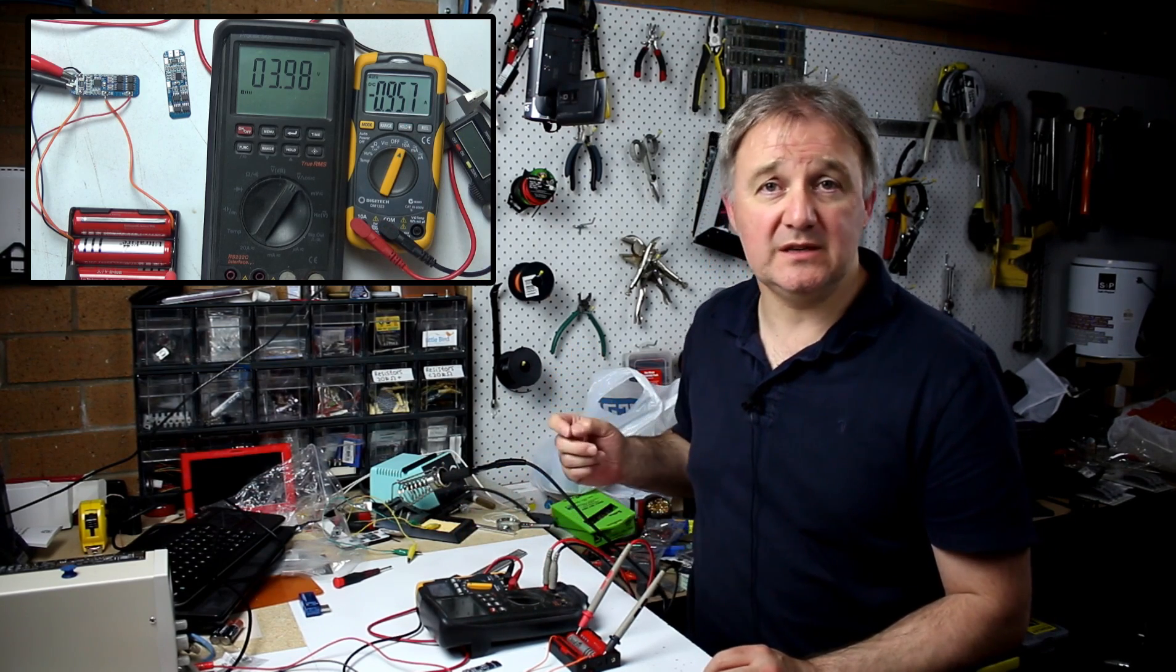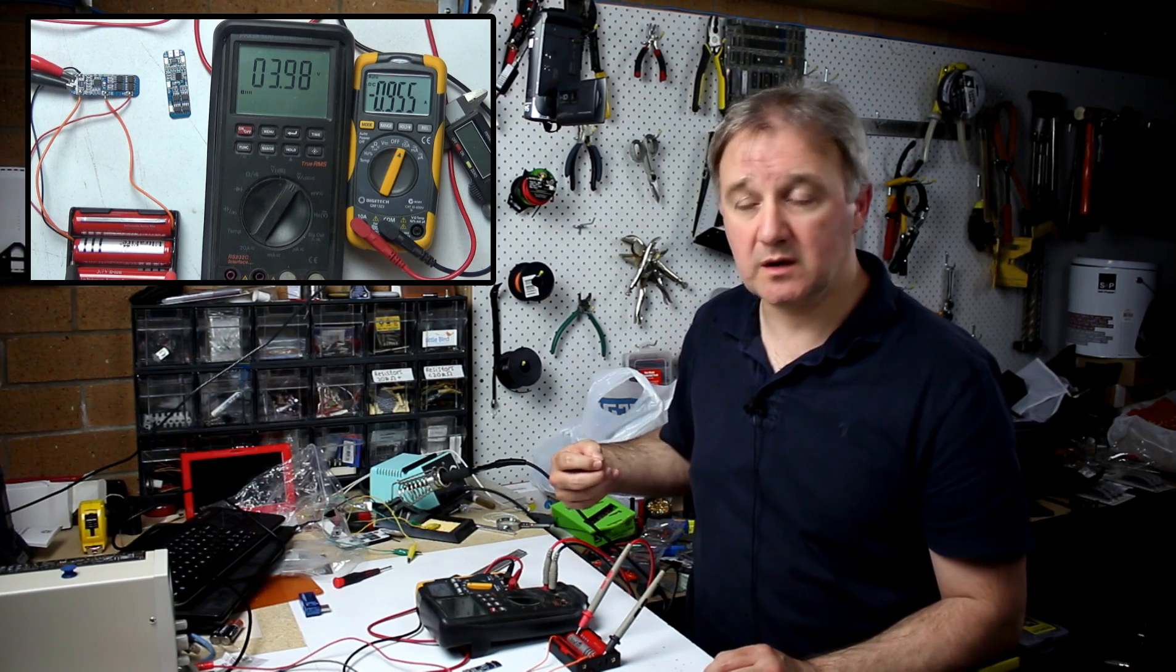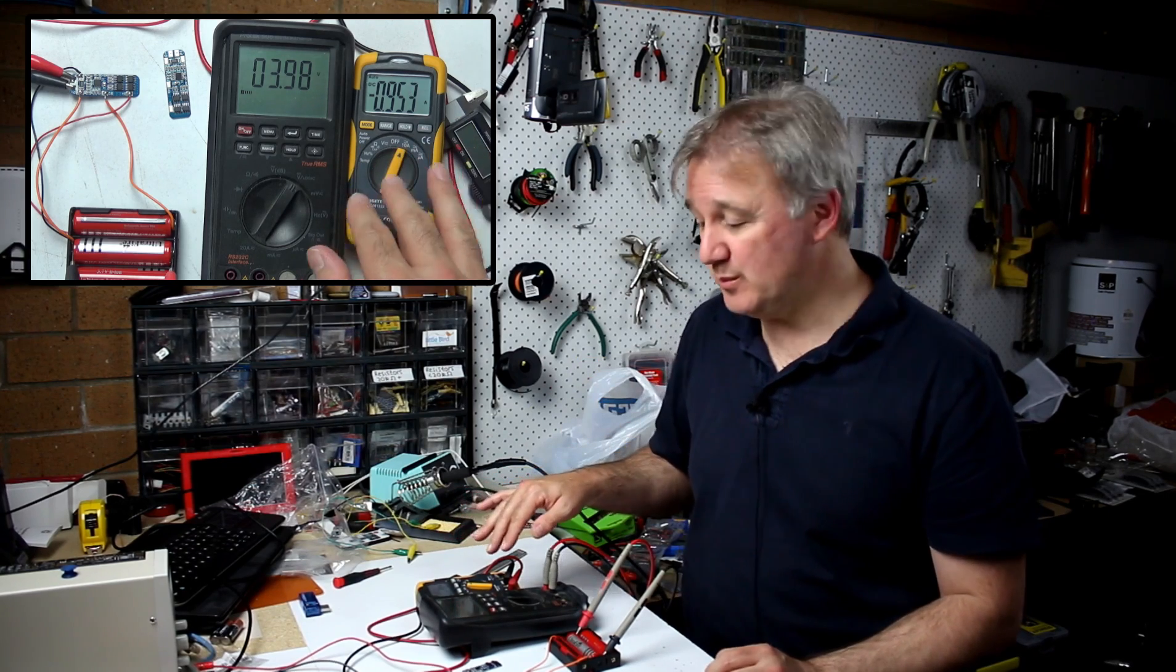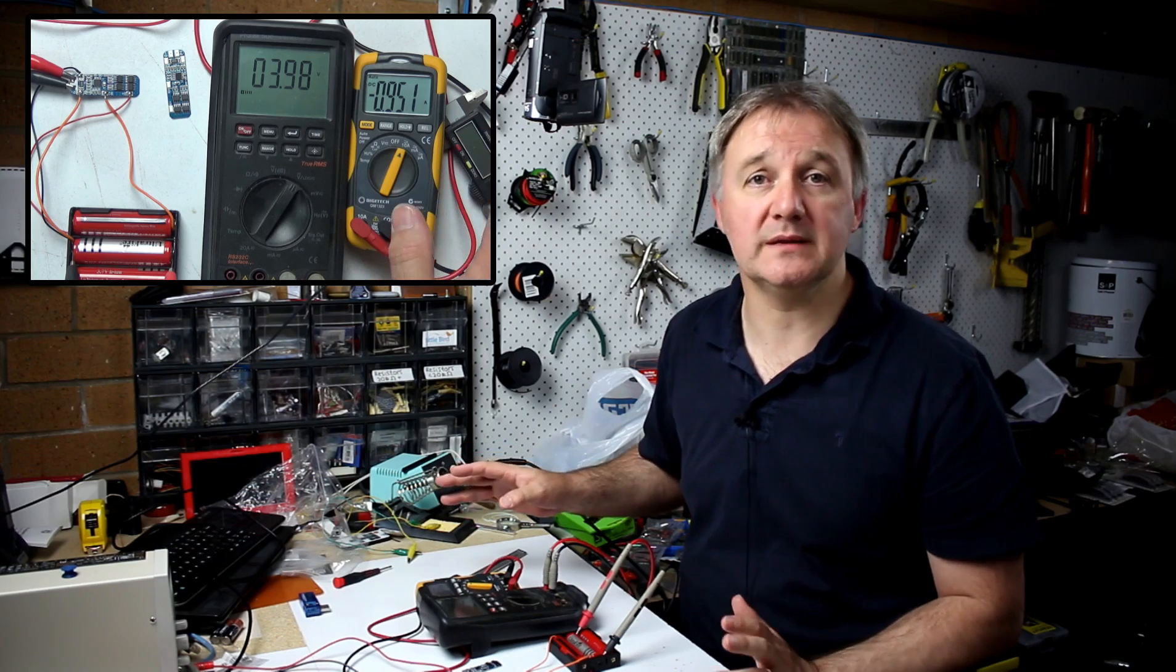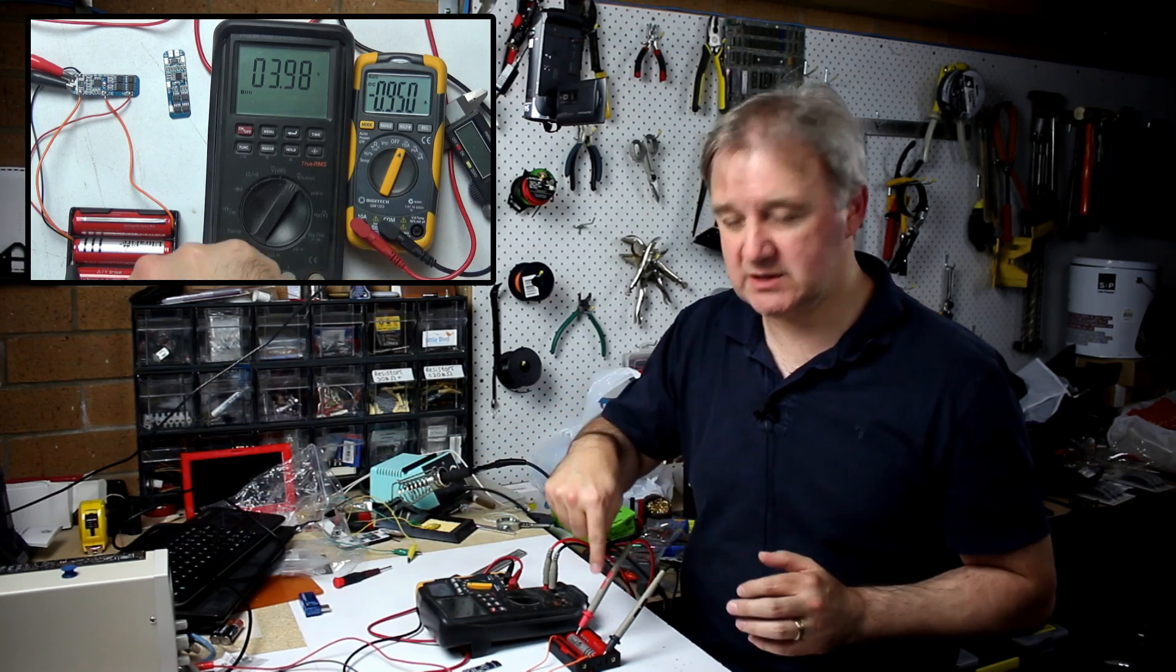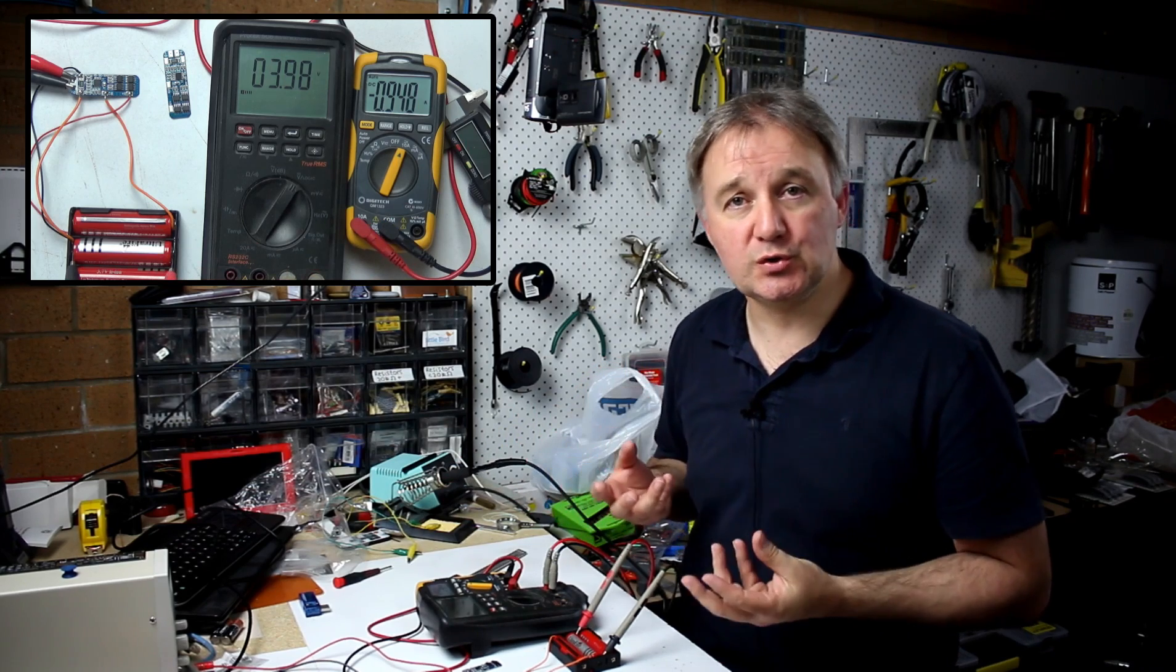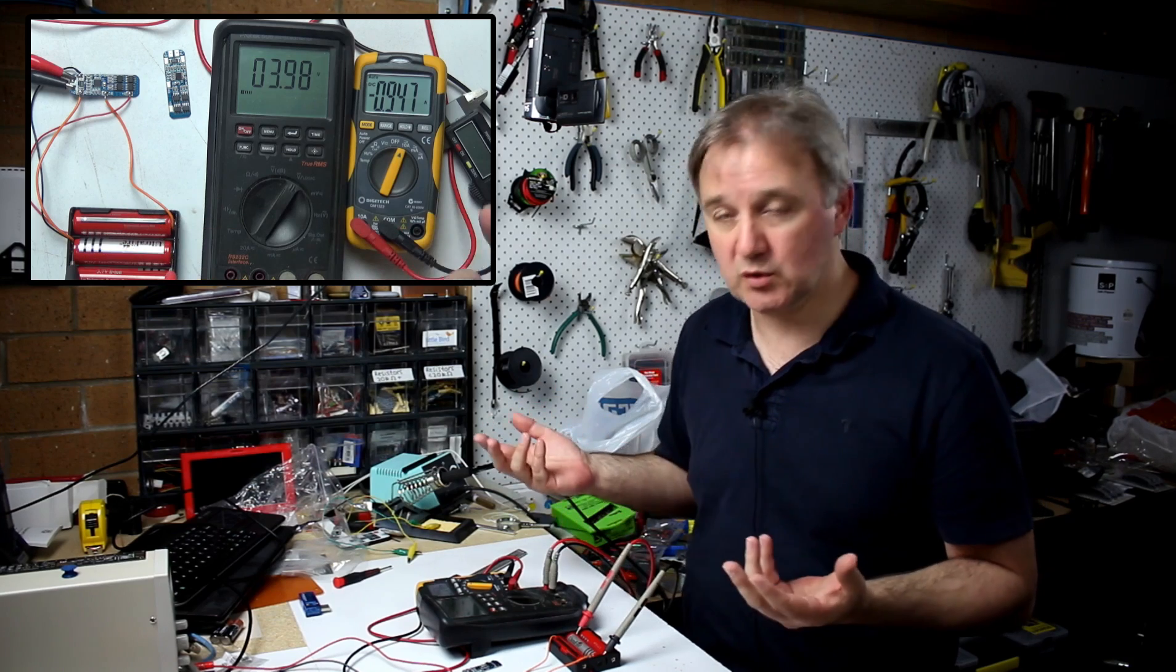So the first stage of charging the 18650s is supposed to be constant current. Well, you can sort of say that's constant current, but it's below the 1C or even 50% of the 1C and that's the sweet spot for charging 18650s. So if these cells were 2 to 2.5 amps each, they're rated at 3 but realistically they're fakes so it's more like 2.